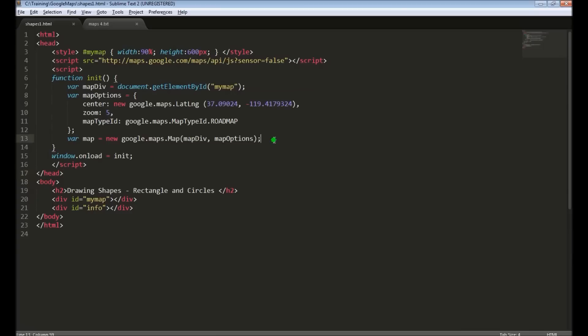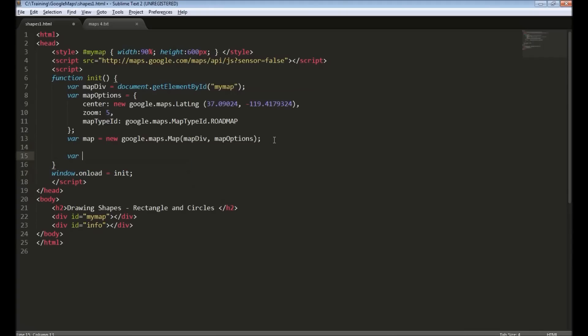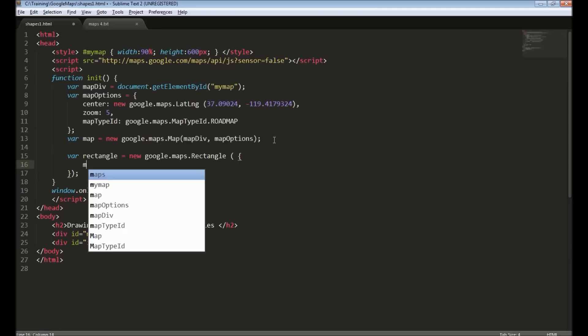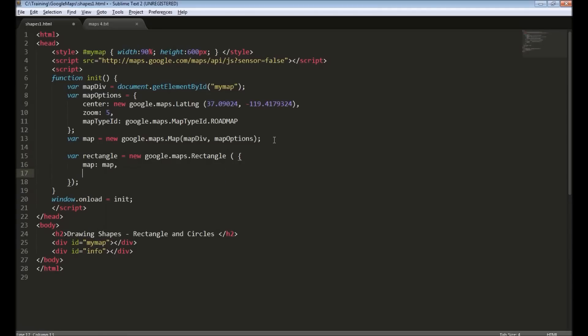To add a rectangle, we just need to create an object of type google.maps.rectangle and provide some rectangle options. First one is a reference to the map object. Next the bounds object. As we saw in our earlier video, bounds is created by using google.maps.latlongbounds and provide two lat-long objects.